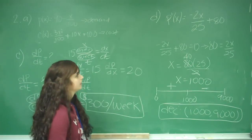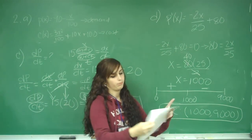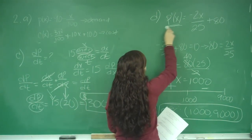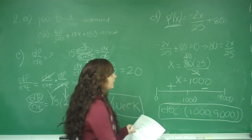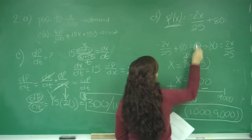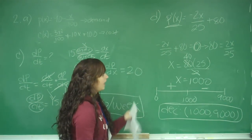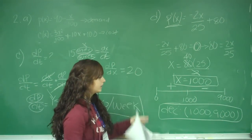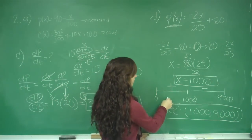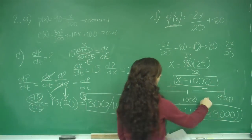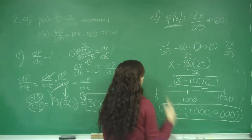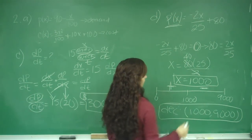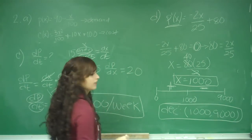For part D, to find when profit is decreasing, we use the derivative of the profit function and set it equal to zero, solving to get x = 1000 as our critical number. We set up a number line and plug in values less than and greater than 1000 into the derivative. We get a positive value below 1000 and a negative value above 1000, so profit is decreasing on the interval (1000, ∞).